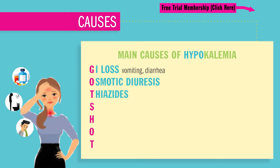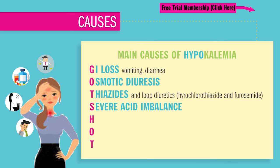T is for thiazide and loop diuretics like hydrochlorothiazide and furosemide, also called potassium-wasting diuretics — they pull potassium from the body and dump it in the potty. S is for severe acid imbalance, which causes disruption in potassium because the sodium-potassium pump, which keeps our pH in balance, is being overworked.